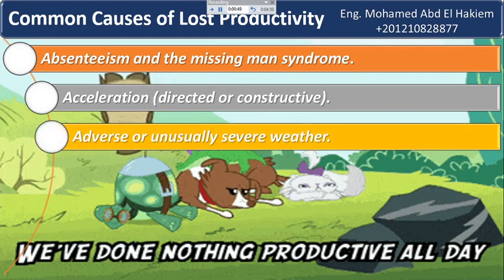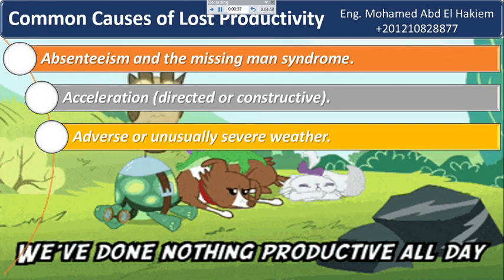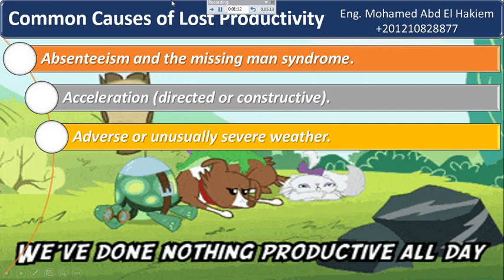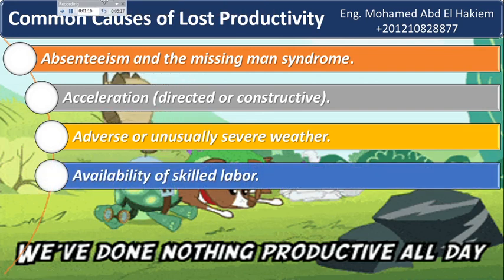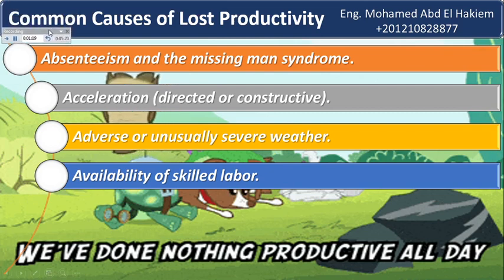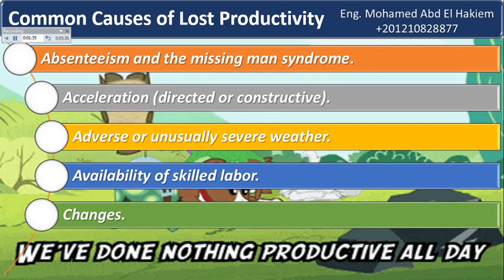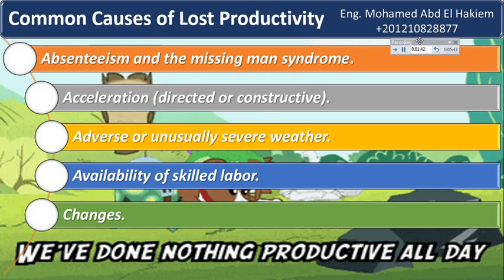Adverse or unusually severe weather — some bad weather is to be expected on almost every project, but pushing weather-sensitive work from good weather periods into periods of bad weather, or encountering unusually severe weather, may impact productivity. For example, earth backfill and compaction operations pushed into wet weather periods. Four: availability of skilled labor. A contractor must have sufficient skilled labor in the field; if skilled labor is unavailable and a contractor must use less skilled labor, productivity will probably be impacted. Five: changes. All projects encounter some change during construction; changes outside the scope of work, multiple changes, or the cumulative impact of changes may all impact productivity.